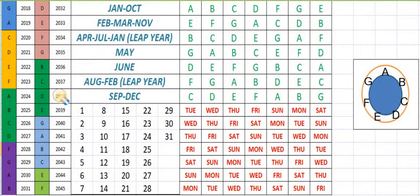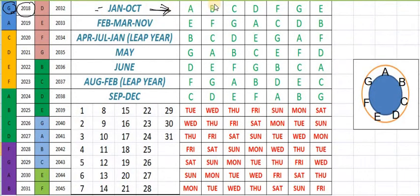Today is 17th January 2018, so let's find out today's date. This is the year 2018 and G is written right behind the year, so we have to remember the letter G. This is the January month — go this way and find the letter G, go down, then you will find today is Wednesday. So this is the 17th January, Wednesday.